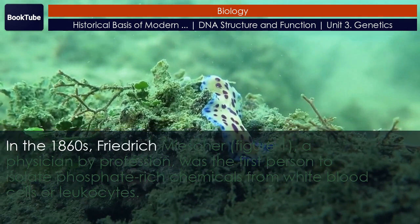Griffith worked with two strains: Rough (R) and Smooth (S). The R strain is non-pathogenic — does not cause disease — and is called Rough because its outer surface is a cell wall and lacks a capsule. As a result, the cell surface appears uneven under the microscope.